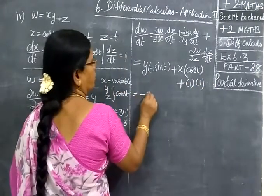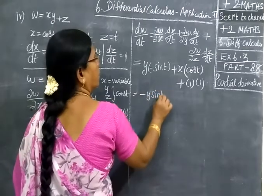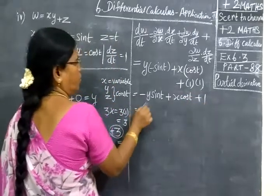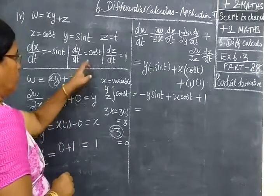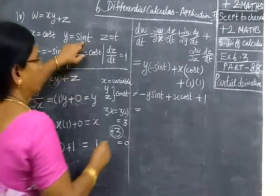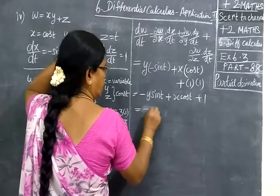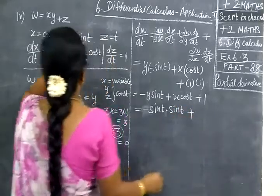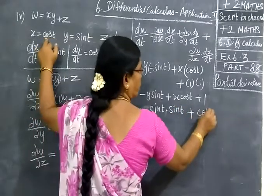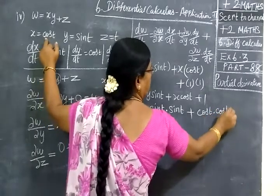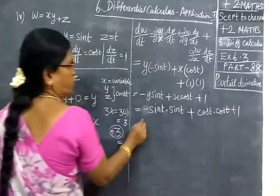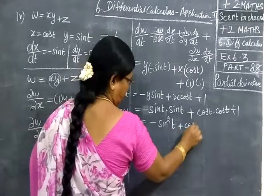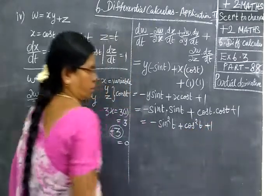So equal to minus y sin t plus x cos t plus 1. Now replace y in terms of t, so y is equal to sin t, so minus sin t. Then for x we are writing cos t, so cos t again cos t plus 1. So equal to minus sin square t, cos square t plus 1.